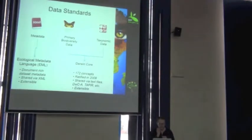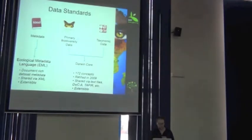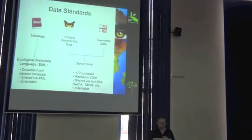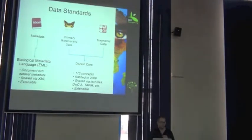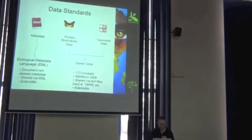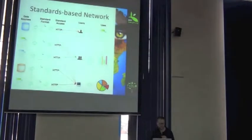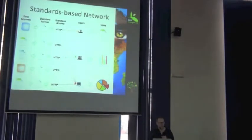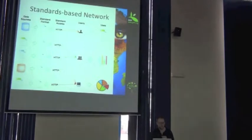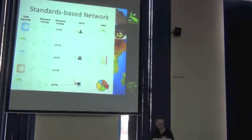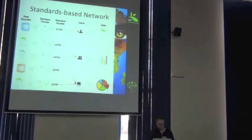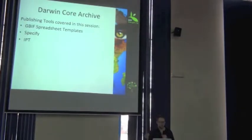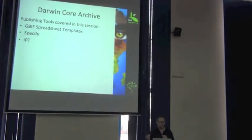And very briefly — for our metadata, we use EML, and for our biodiversity data, we use Darwin Core. These are also standards when it comes to sharing information. In this IPT toolkit, you're going to be sharing your data on the internet, so standard access over HTTP is used. And ultimately, what you're sharing is a zipped archive called the Darwin Core Archive — this is also in a standard form.